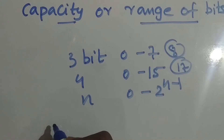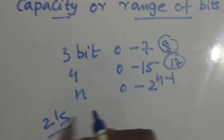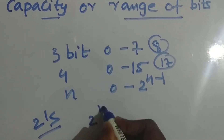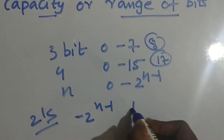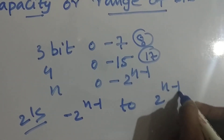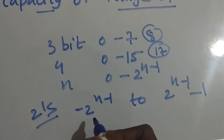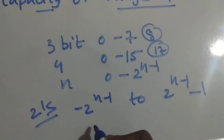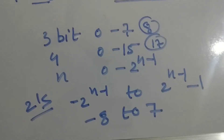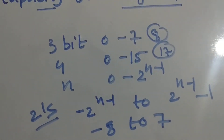For signed numbers in two's complement form, the range is from -(2^(n-1)) to 2^(n-1) - 1. So for a 4-bit two's complement number, the range is -8 to 7.